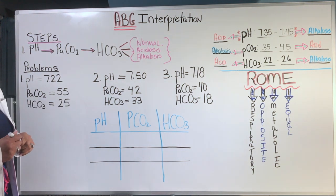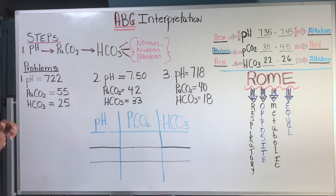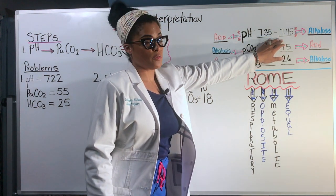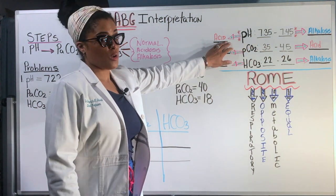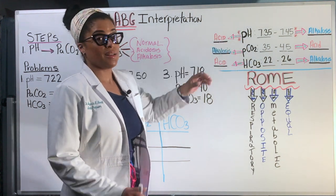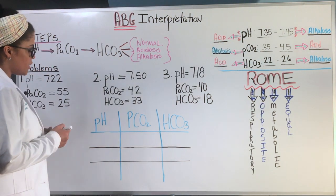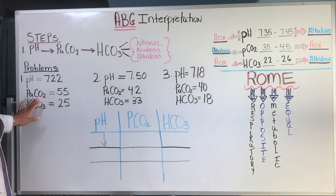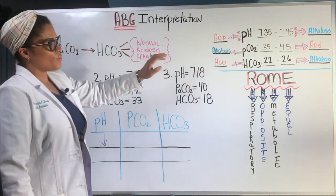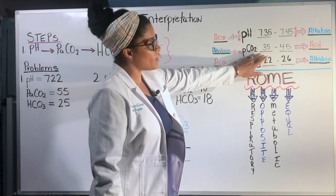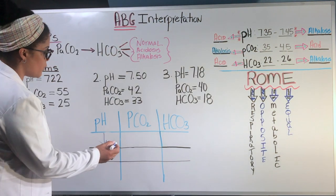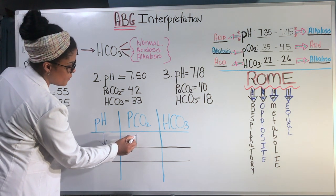So doing the acronym ROME, we're going to do the first example. In this example, the pH level is 7.22. And looking at the normal range, which is pH of 7.35 to 7.45, this is below the minimum value that it should be. So it is an acid. So I'm going to put an arrow pointing down because it's low. Then we have the CO2 level 55. The range is 35 to 45. So that is above the maximum range that it should be. So it's acid as well. So we're going to point the arrow up because it's elevated.